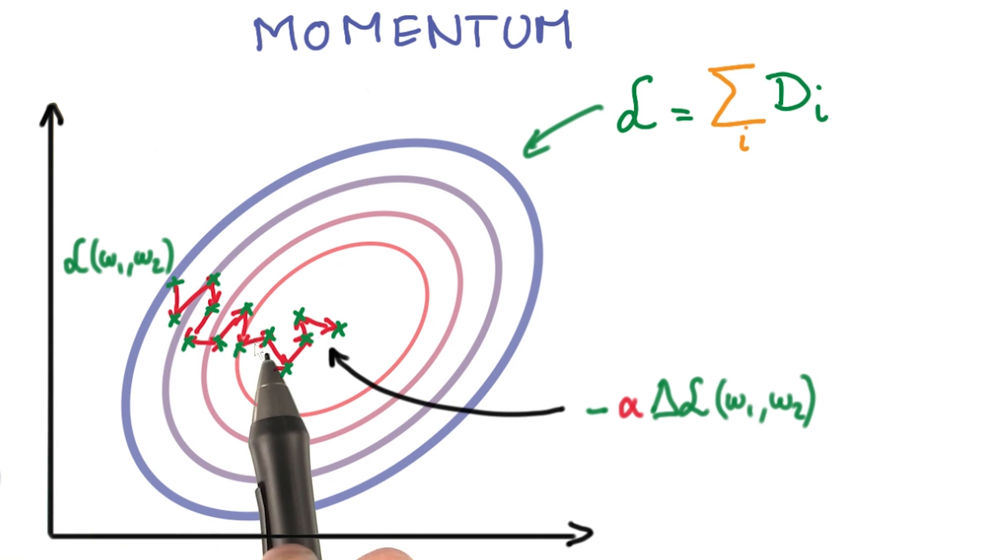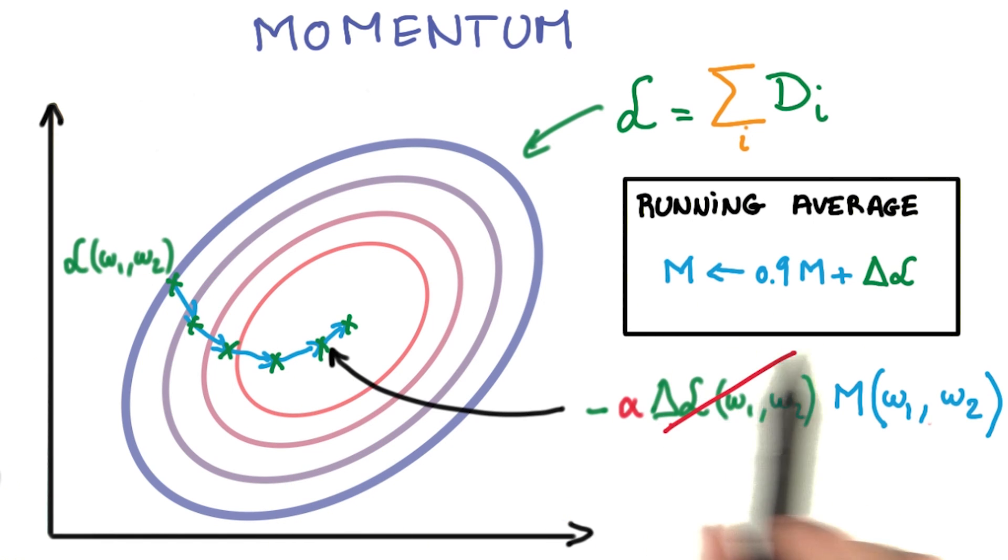We can take advantage of the knowledge that we've accumulated from previous steps about where we should be headed. A cheap way to do that is to keep a running average of the gradients and to use that running average instead of the direction of the current batch of the data. This momentum technique works very well and often leads to better convergence.